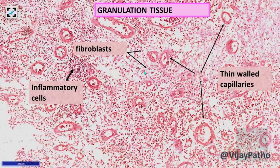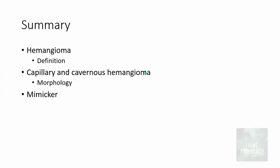Granulation tissue may mimic capillary hemangioma, particularly a type called pyogenic granuloma. Pyogenic granuloma is exuberant granulation tissue — sometimes called lobular capillary hemangioma — but it is not a tumor; it is a reactive proliferation of blood vessels. Hemangioma, on the other hand, is a benign tumor. So the differential diagnosis for capillary hemangioma includes granulation tissue or pyogenic granuloma.